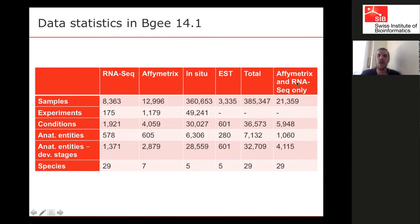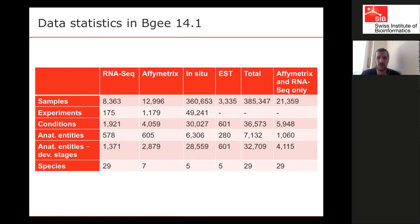If we look only at the high-throughput methods — Affymetrix and RNA-seq — we have data in about 1,000 organs across different species, making on average 35 organs per species. Mixed with different developmental stages, that gives about 4,000 organ-stage combinations, meaning more than 100 per species on average, for which we have something close to complete genome expression.